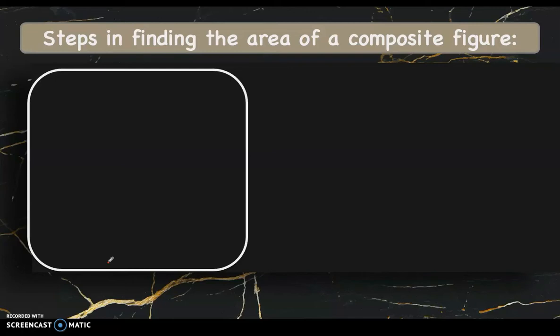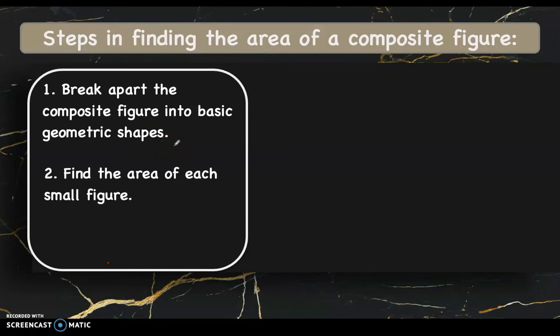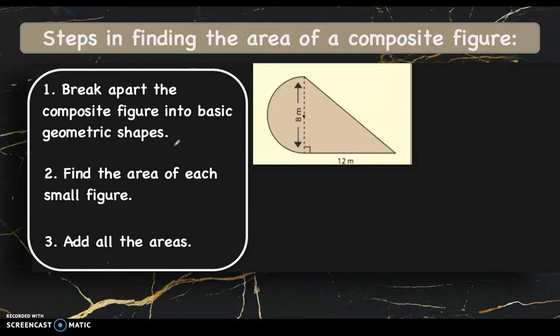Here are the three steps in finding the area of a composite figure. First, break apart the composite figure into basic geometric shapes. Next, find the area of each small figure. And lastly, add all the areas. Let's apply these steps in the given examples.